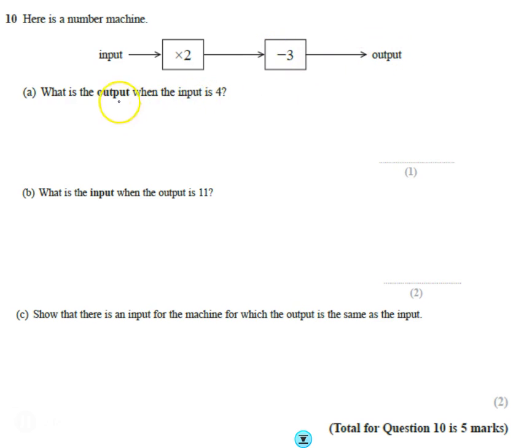So what is the output when the input is 4? Well, first thing we've got to do is we put the 4 in here, then it's going to times by 2, then we get 8. Then the 8 comes from here, and then we're going to subtract 3 from that, so we're going to end up with an output of 5. So an input of 4 comes with an output of 5.